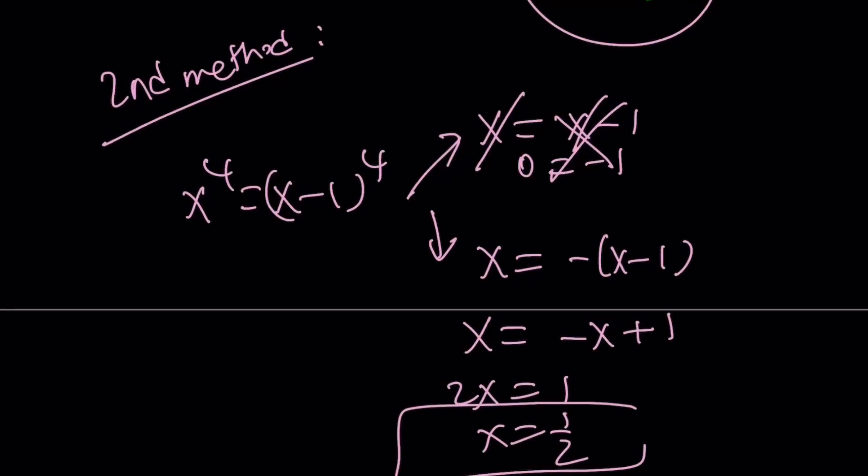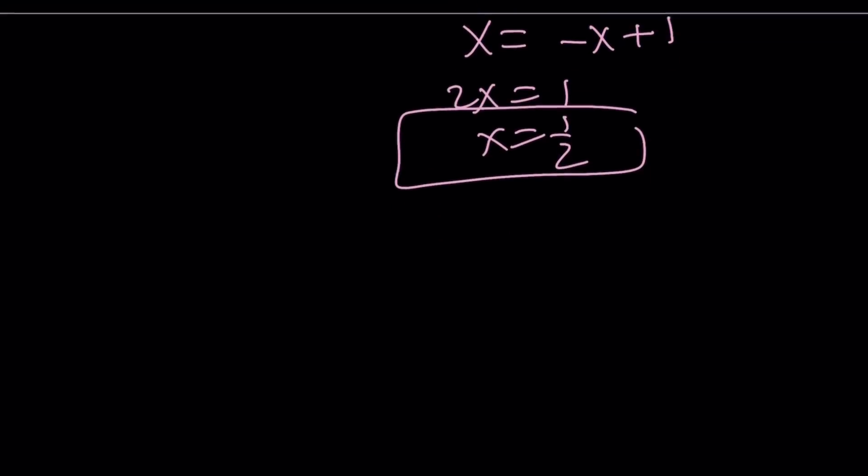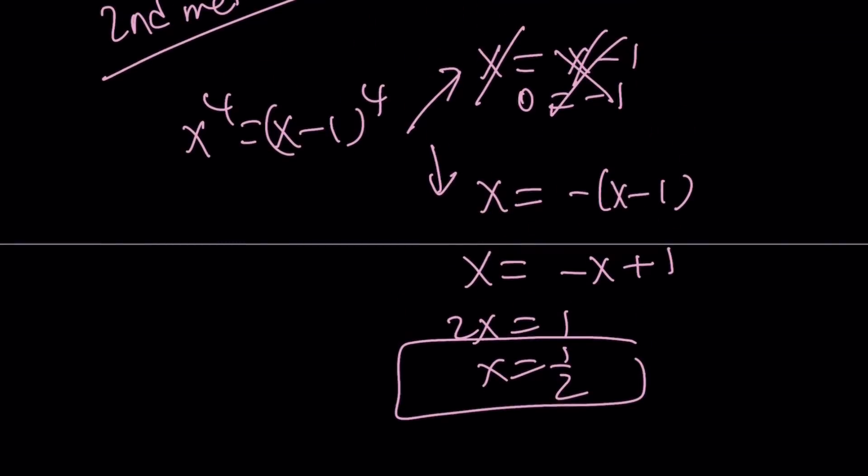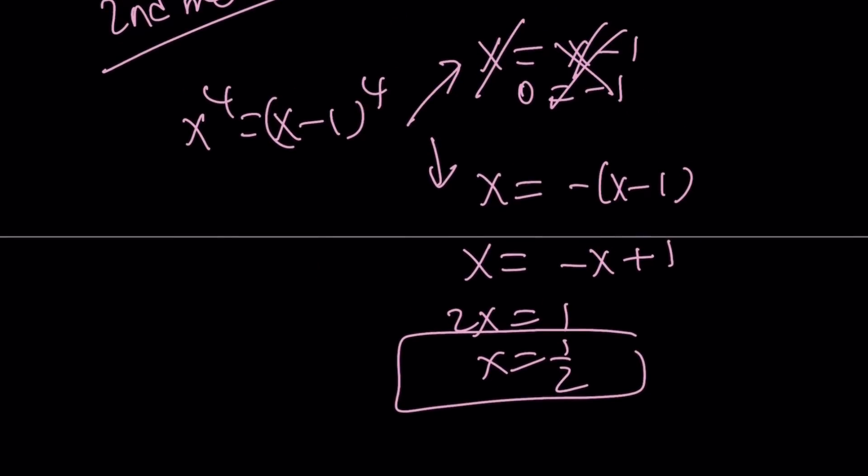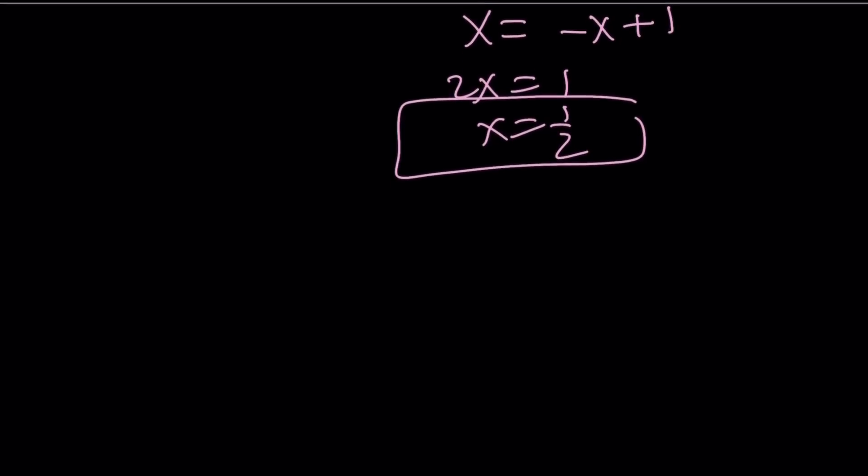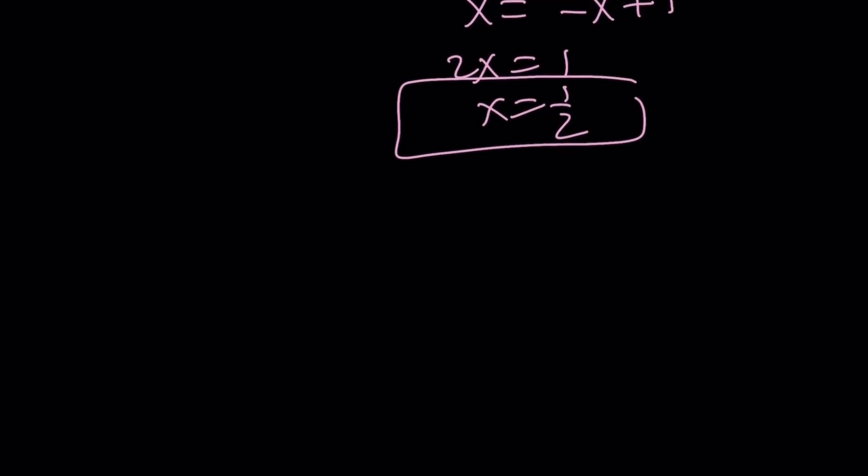But wait a minute. Where are the other solutions that are complex? Well, you don't get them solving the equation this way because this is a very real solution. And it doesn't give you any complex solutions. But don't worry. Once you know that x = 1/2 is a solution, you can go ahead and turn it into a cubic. But don't use the first method. And divide by x minus 1/2. So x minus 1/2 is going to be one of the factors. And it's easy to find the other factor by long division or whatever division you want to do.